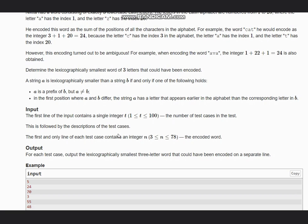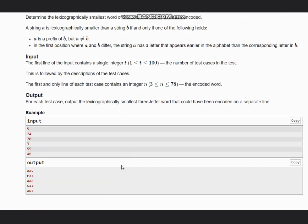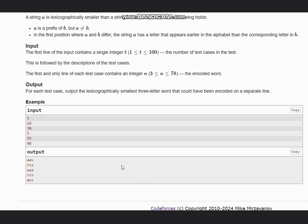The input is T and N. N is the length of the encoded word, meaning the overall sum, and T is the number of test cases. We need to print the lexicographically smallest three-letter word that could have been encoded on a separate line as the output.